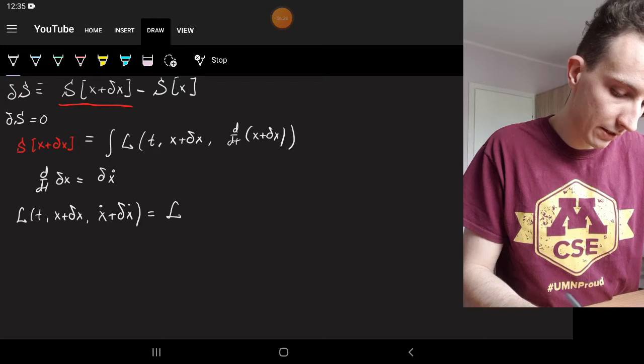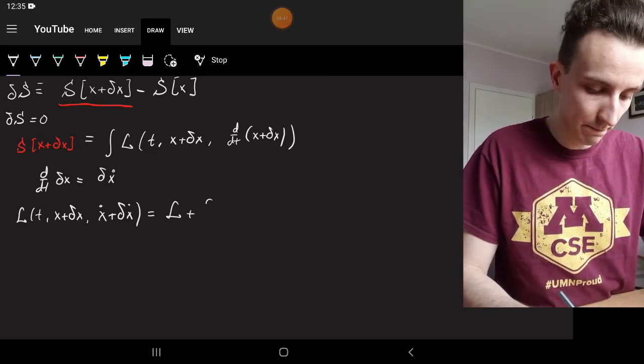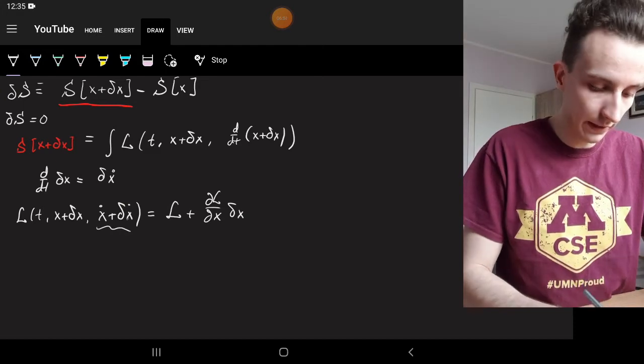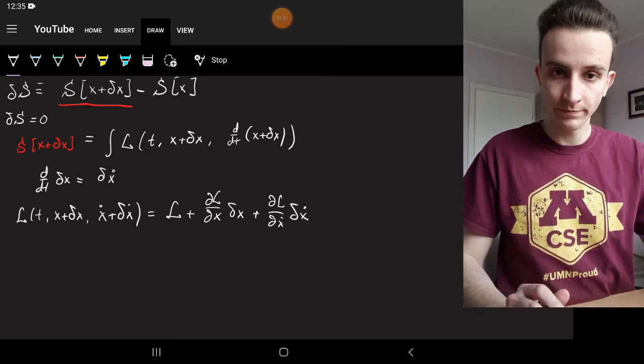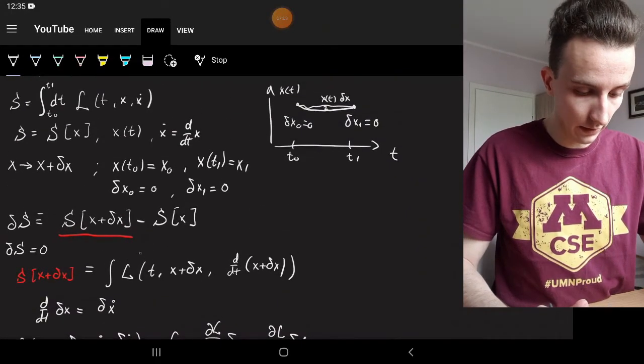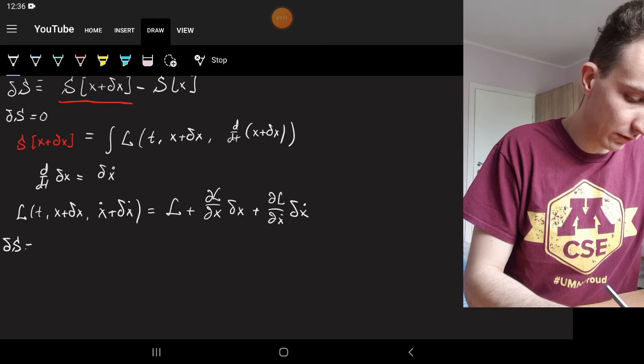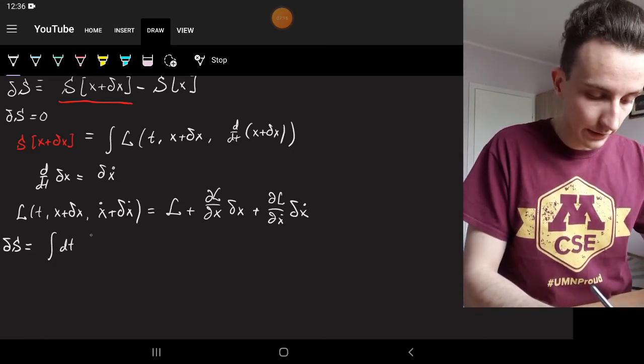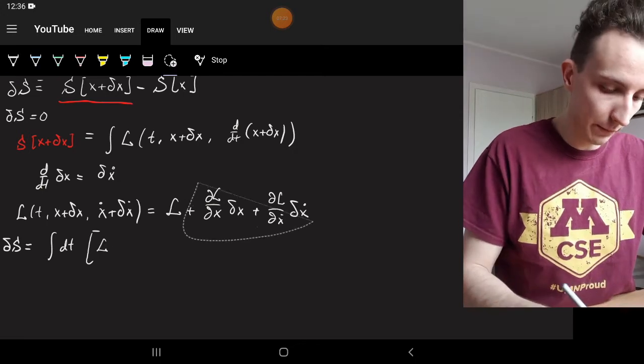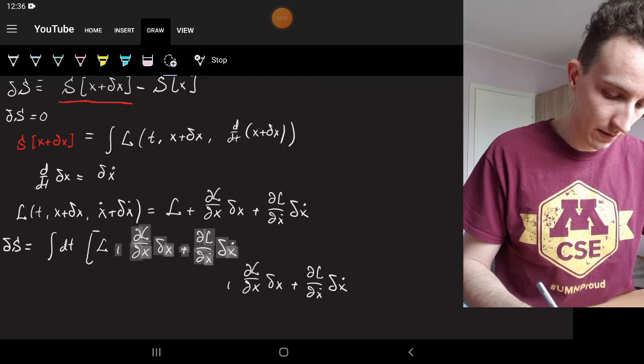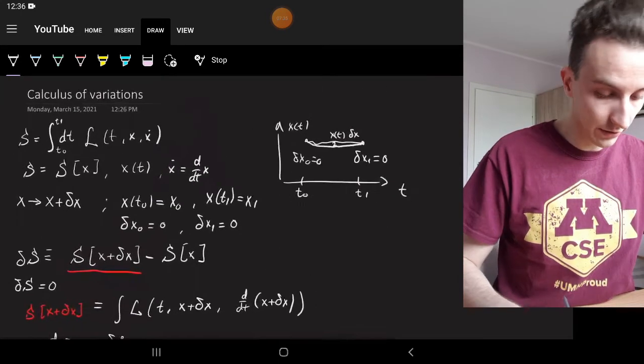So we have this, and now we need to Taylor expand this Lagrangian so that we would have linear orders of delta x. So that's going to be just our regular L of t, x, x dot, plus when I Taylor expand, is del L by del x times delta x, and then when I expand with respect to this I get del L by del x dot times delta x dot. So now I'm going to be putting that inside here, and because the integrals are additive we can put everything in the same integral. So delta s is going to be the integral dt.